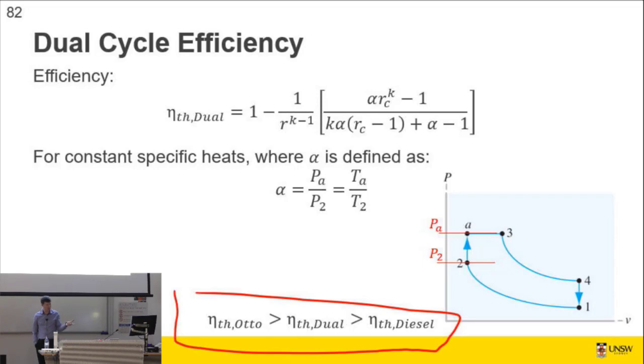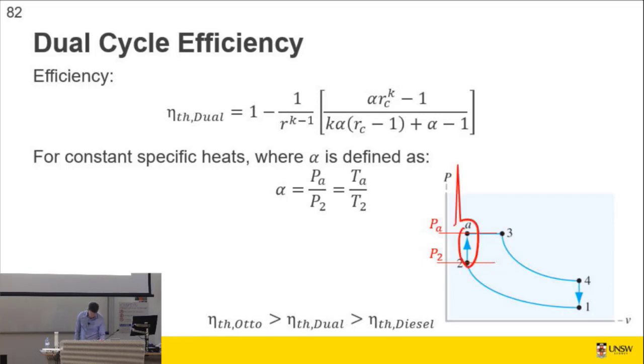So just using those as variables, we can calculate the thermal efficiency. It's somewhere between the auto cycle and the diesel cycle. Question, high values of alpha or low values of alpha, so adding most of the heat here or adding most of the heat there will give you higher efficiency. What do you think? What does your gut tell you? That's right. Adding most of the heat in this, if all of the heat was added on the vertical, then it would be most like the auto cycle, which has a higher thermal efficiency.